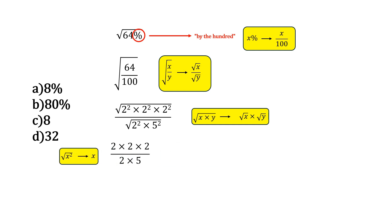And we are left with 2 times 2 times 2 over 2 times 5, which is 8 over 10.